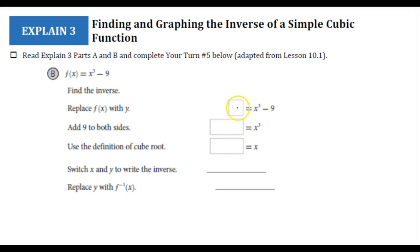We're going to replace f(x) with y. The next thing we're going to do is try and isolate x³ by adding 9 to both sides. So I'm left with x³ = y + 9.